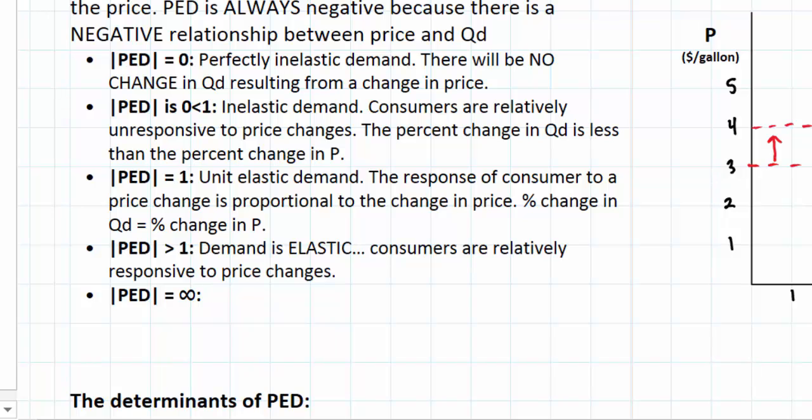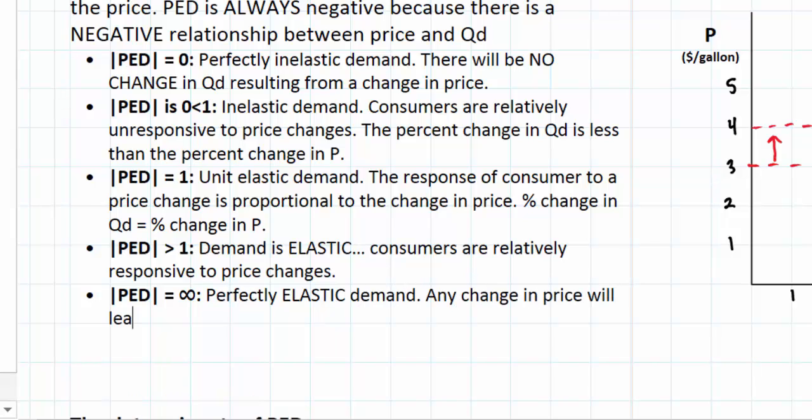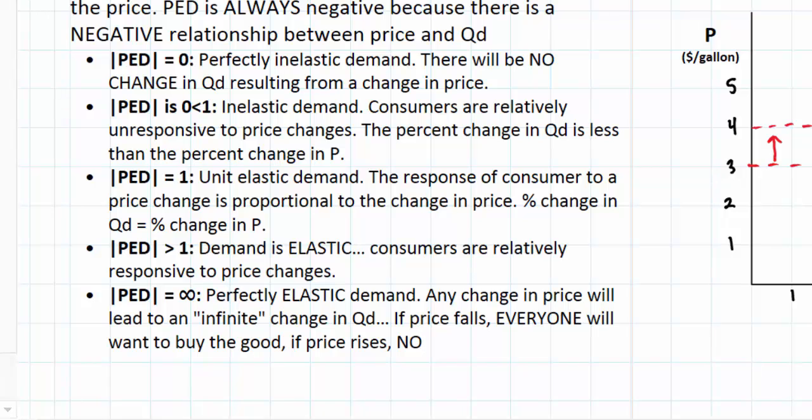Now theoretically, PED could be equal to infinity. This is what we call perfectly elastic demand. In other words, any change in price will lead to an infinite change in quantity demanded. If price falls, everyone will want to buy the good. If price rises, no one will want to buy the good.